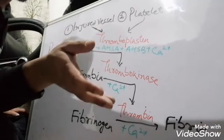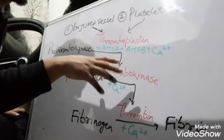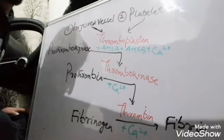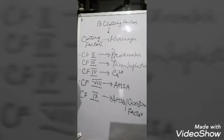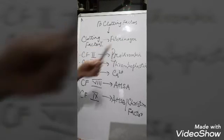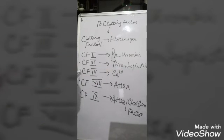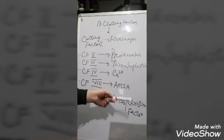The remaining clotting factors you need not memorize. Just remember these: clotting factor 1 is fibrinogen, clotting factor 2 is prothrombin, clotting factor 3 is thromboplastin, clotting factor 4 is calcium, clotting factor 8 is AHSA — whose full form is anti-hemophilic substance A — and clotting factor 9 is AHSB.